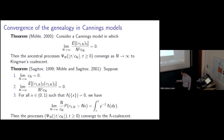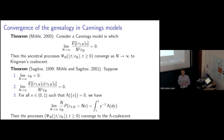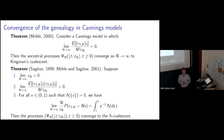There is a theorem of Möhle and Sagitov which says that as long as this condition here is satisfied, the genealogy of the Cannings model converges to Kingman's coalescence. This condition is really saying that the probability that three randomly chosen individuals in some generation all have the same parent is small relative to the probability that two randomly chosen individuals have the same parent. That's naturally a condition under which we would expect to see only pairwise mergers of ancestral lines. Also notice that the time scaling by c_N is natural because c_N is the probability that two individuals have the same parent.